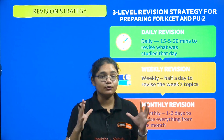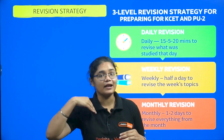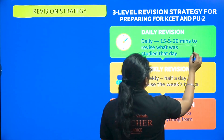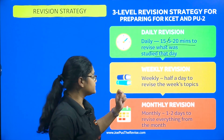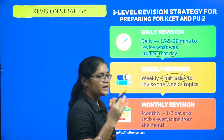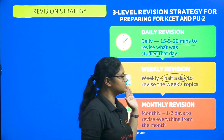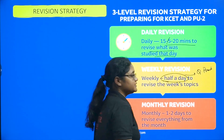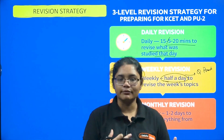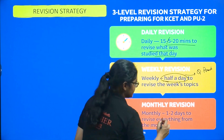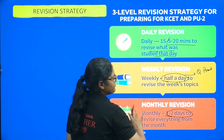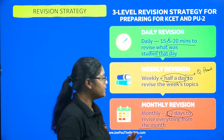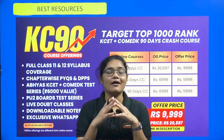Next is the revision strategy, which is very important. If you keep studying without revising, you'll end up forgetting everything and have to start from scratch. First, do daily revision — spend 15 to 20 minutes revisiting whatever you studied that day. Next, weekly revision: dedicate half a Sunday to revise everything covered during the week. For subjects like physics and maths, the best way to revise is through question practice. Finally, monthly revision: allot one to two days to revise everything studied that entire month, again focusing on question practice.